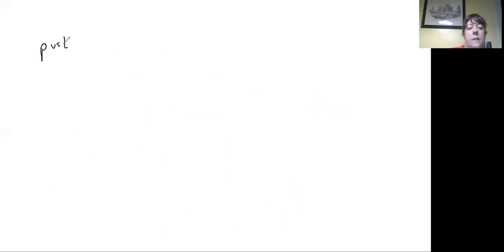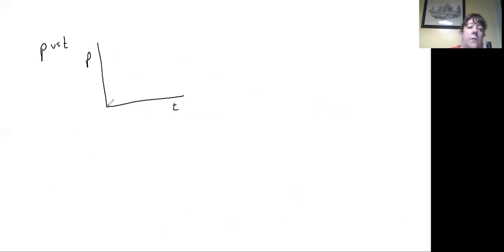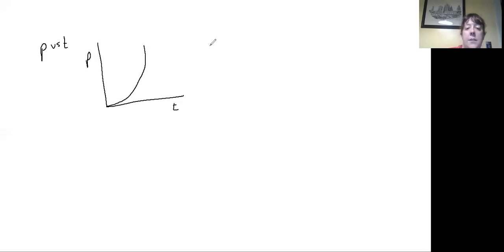Let's think about how we recognize that an acceleration is happening on a position versus time graph. On a position versus time graph, we know acceleration is taking place when our line is curved. This curved black line shows a positive velocity — we know it's positive because the slope is positive. It's also a positive acceleration because the object starts out moving at a very slow speed and the slope becomes steeper and steeper. So the black line has positive velocity, positive acceleration, and the object is speeding up.